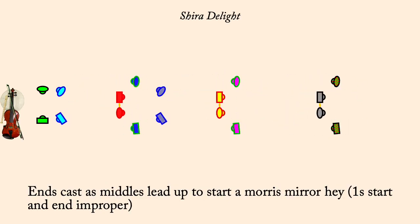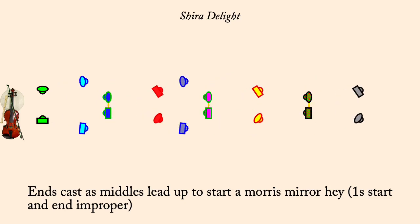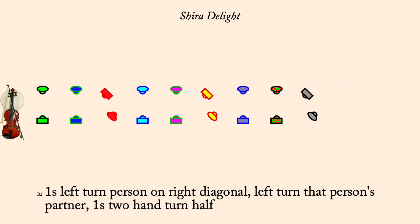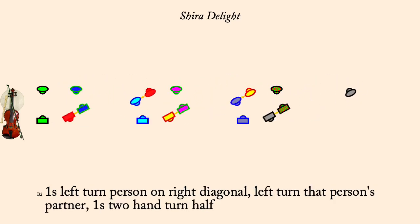Ones left turn person on right diagonal, right turn their partner, ones two-hand turn half.